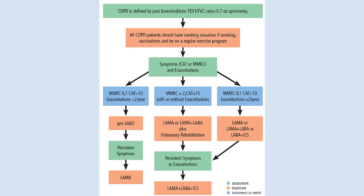There is a management algorithm based on two measurements — MMRC and CAT — which assess functional impairment. Most patients sit at the moderate level on this algorithm, receiving a long-acting beta agonist plus a long-acting muscarinic antagonist. You can step up by adding inhaled corticosteroids, or some patients with very mild COPD may just need PRN albuterol. It just depends on where they're at, but most of the time they're at that moderate level.